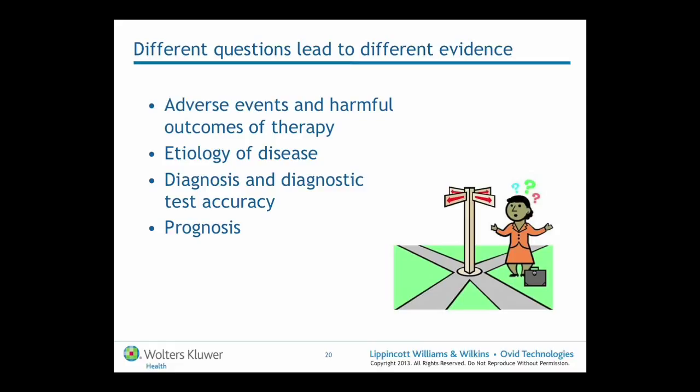It's also important to note that whilst systematic reviewing kicked off in healthcare — with Archie Cochrane's first statement back in 1972 — it's now being applied across an entire range of fields: agriculture, developmental studies, law, and economics. Systematic reviews in all these fields follow the same objective criteria to address existing research evidence and inform policy and practice.